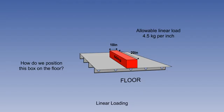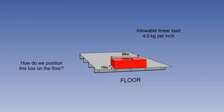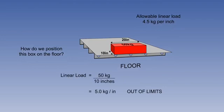Let us look at an example of calculating the allowable linear load distribution where a box of mass 50 kilograms is to be placed on a cargo floor whose linear loading limit is 4.5 kilograms per inch. The box must be placed in the best position so that the floor linear limit is not exceeded. Place the 50 kilogram box measuring 20 inches by 10 inches in the position shown. Dividing the mass, 50 kilograms, by the shortest length, 10 inches, results in a linear load of 5 kilograms per inch on the floor frames. This is unacceptable because the loading limit of 4.5 kilograms per inch would be exceeded.